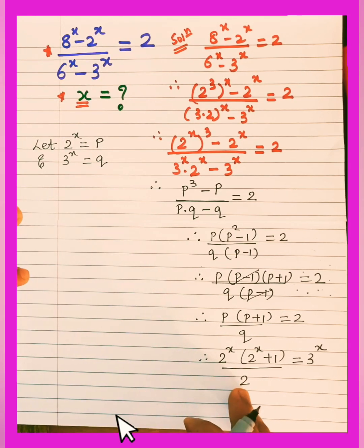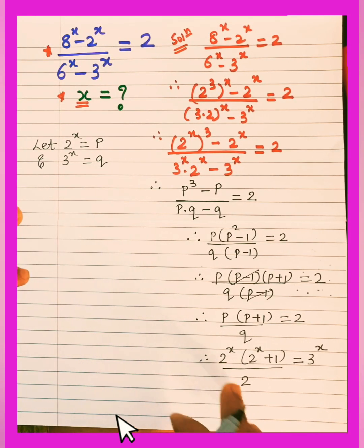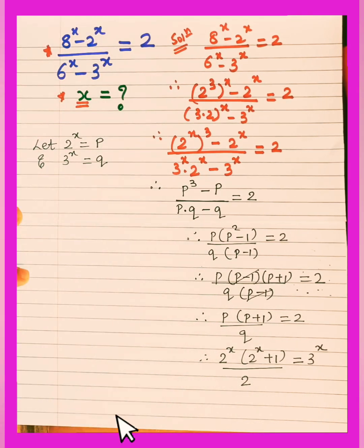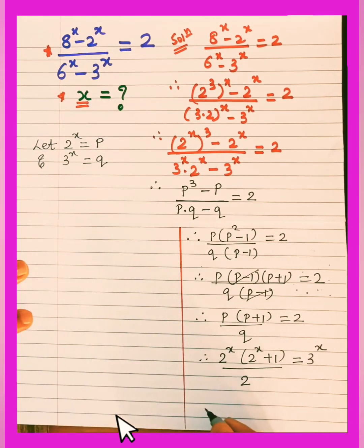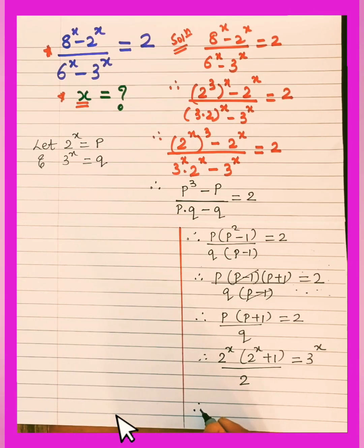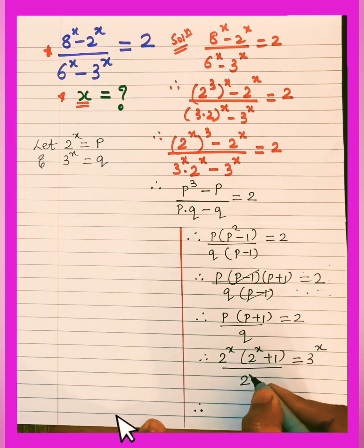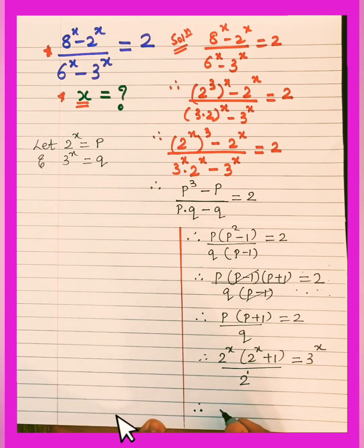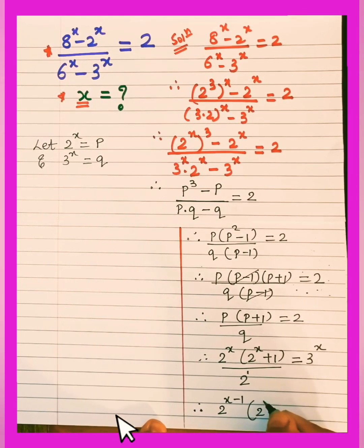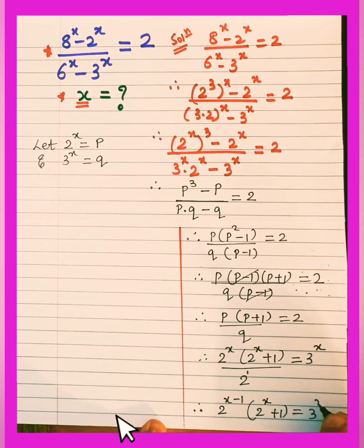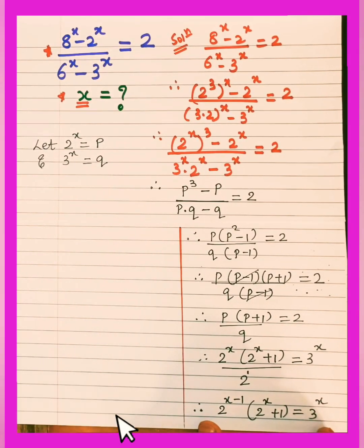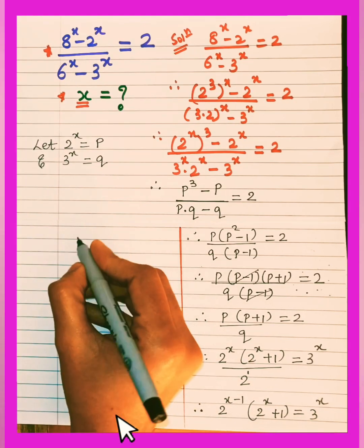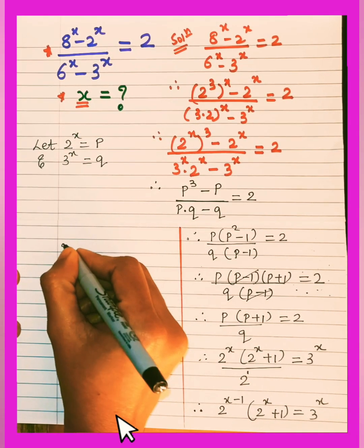Now 2^x divided by 2 — since bases are the same we apply the rule of exponents. We can write 2 as 2¹, so 2^x / 2¹ = 2^(x−1). Therefore the equation becomes 2^(x−1) × (2^x + 1) = 3^x.